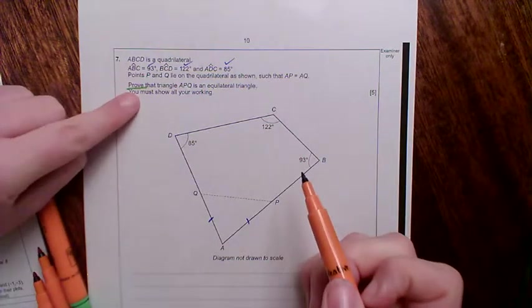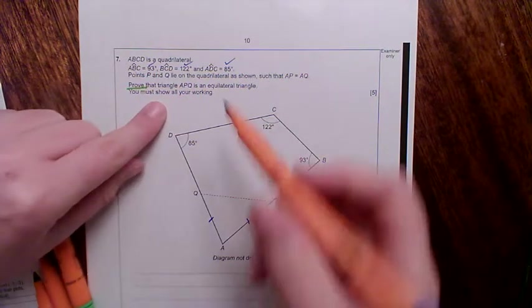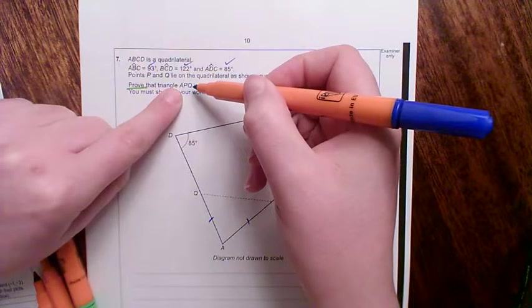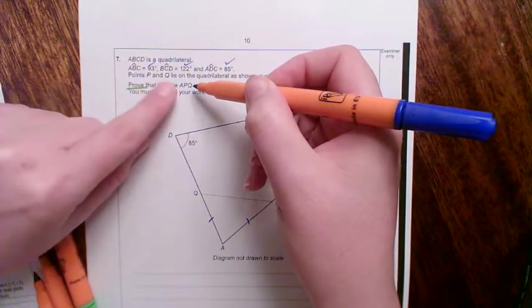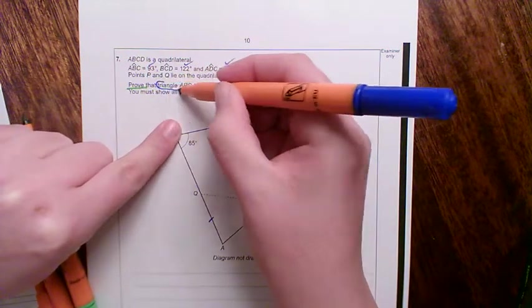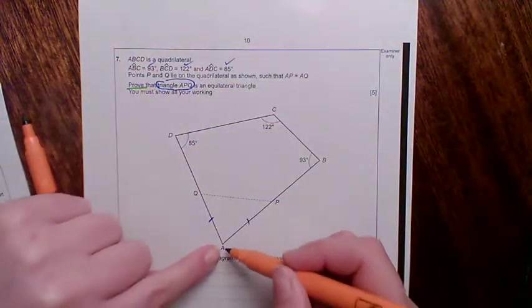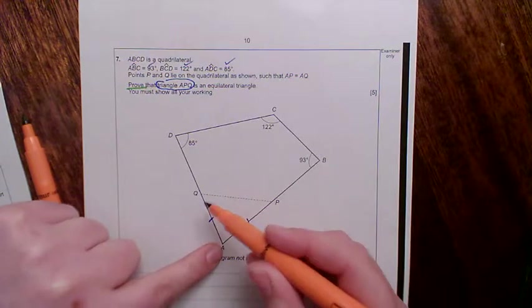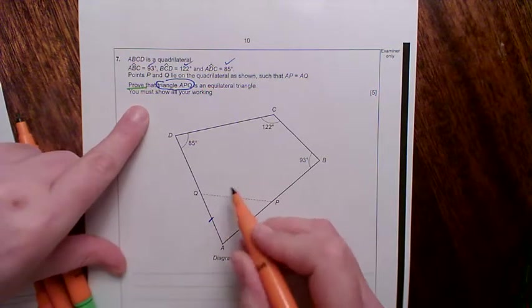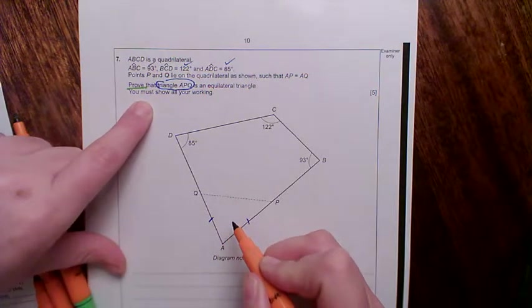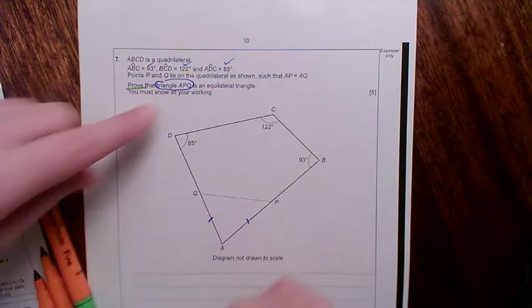And this has asked you to prove that triangle APQ. Notice how this is three letters. However, it doesn't have the little roof above the middle one, so it's not an angle this time. They're talking about the triangle enclosed by points A, P, Q. They're not talking about the angle APQ. So prove that this triangle is an equilateral triangle. You must show all your working out.